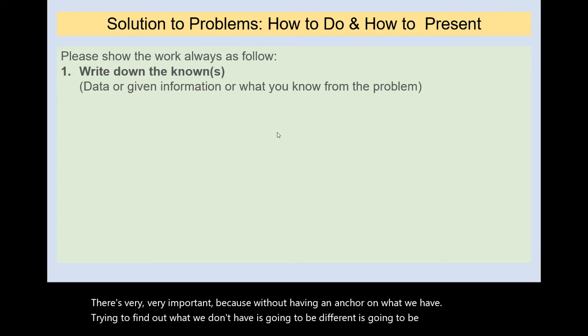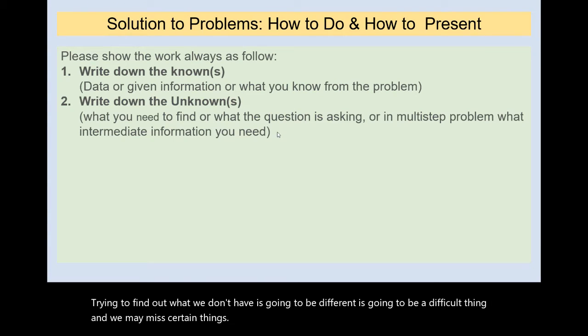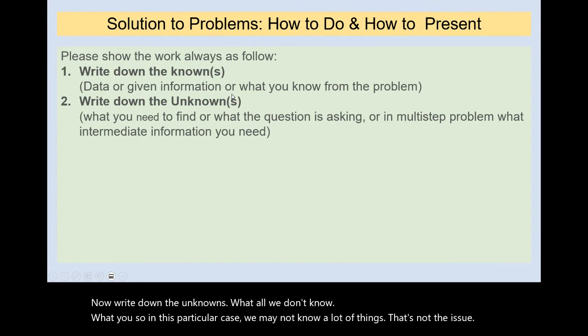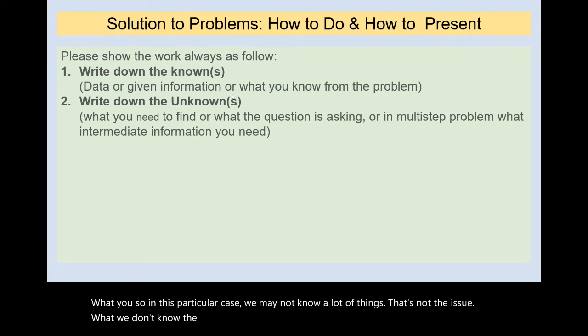Now write down the unknowns: what you don't know, what you need. In this particular case, maybe you know a lot of things; that's not the issue. What we don't know—the focus is essentially what we need to find or what the question is asking, or in multi-step problems what intermediary information you might need.